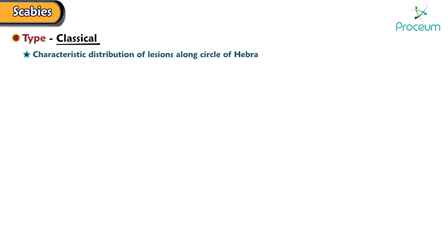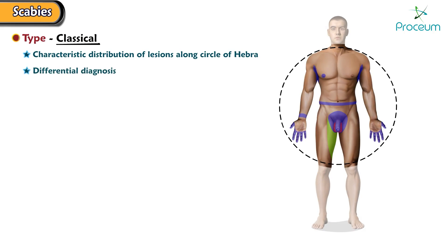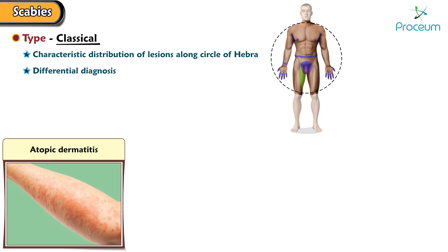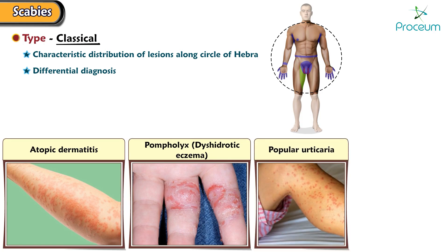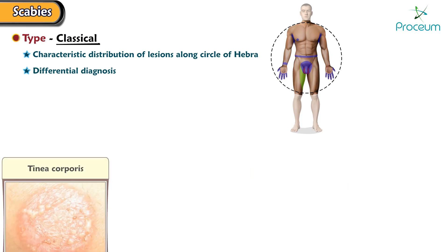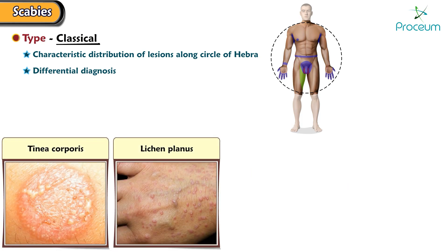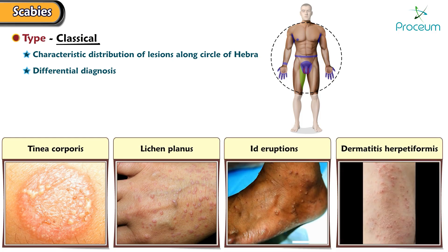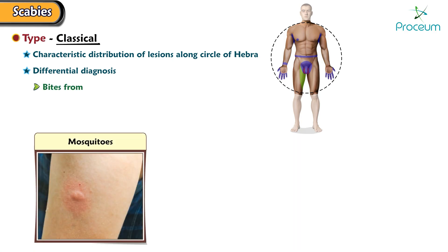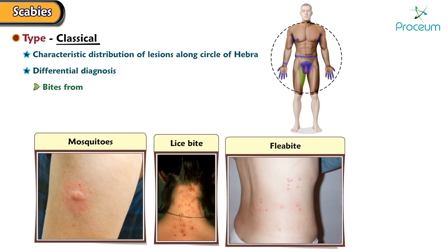Let's go over the different types of scabies. First, classical scabies. This type has a characteristic distribution of lesions along the circle of Hebra. Differential diagnosis of classical scabies include atopic dermatitis, pompholyx, papular urticaria, contact dermatitis, tinea corporis, lichen planus, id eruptions, dermatitis herpetiformis, and bites from mosquitoes, lice, fleas, or other mites.